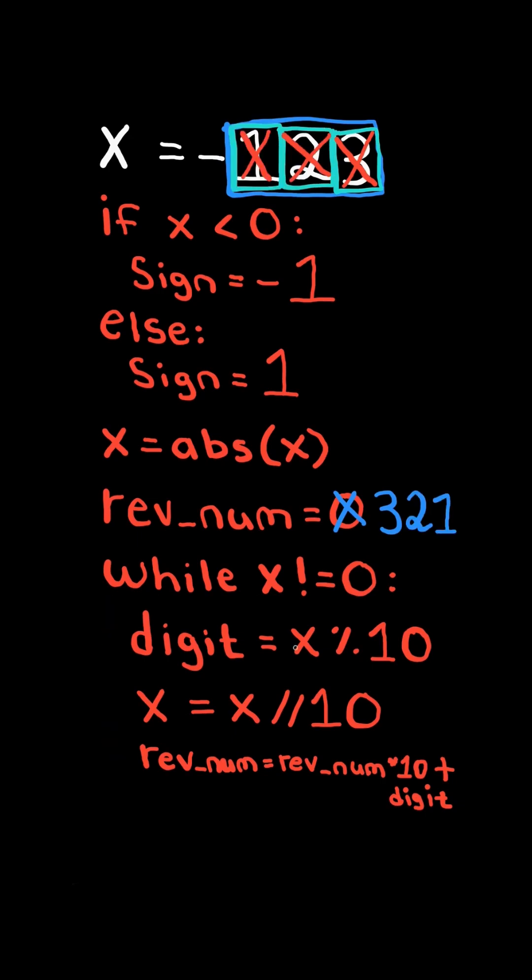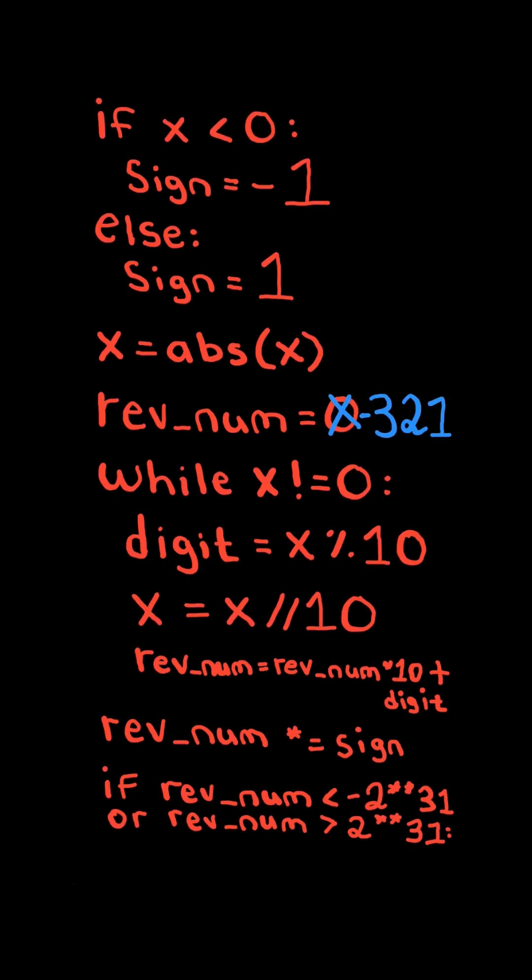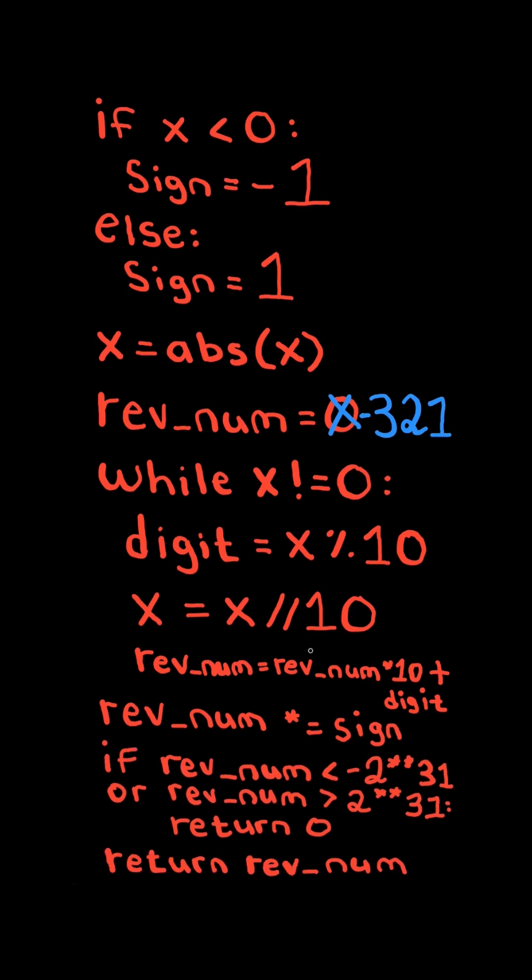At the end, reverse num will contain the reverse integer, and we multiply it by the sign. If the number is outside the 32-bit range, we return zero. Otherwise, we return the reverse number.